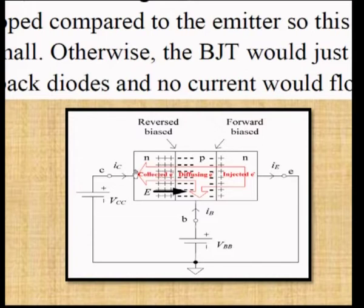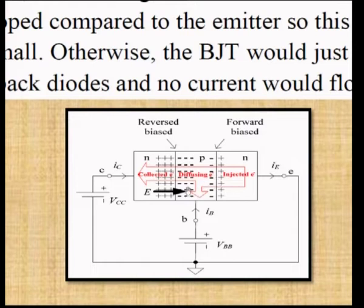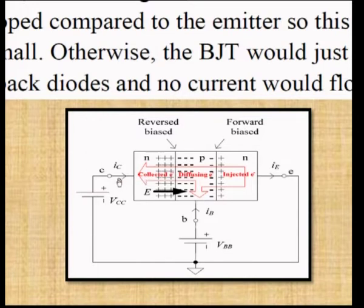The sweeping of electrons produces the collector current IC. The holes in the base region combine with electrons from the emitter, producing the base current IB. Since electrons and conventional current move in opposite directions, we observe IC, IE, and IB as the three currents obtained from an NPN transistor in active mode.